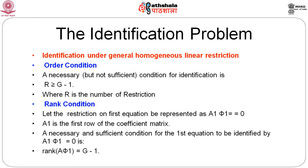Now let me discuss identification under general homogeneous linear restrictions. The order condition is that r must be greater than or equal to g minus 1, where r is the number of restrictions in the model. The rank condition requires that the restriction can be represented as A1·Φ1 equals 0, where A1 is the first row of the coefficient matrix, and the sufficient condition for the first equation to be identified is rank of A·Φ1 equals g minus 1.